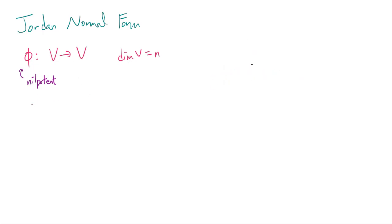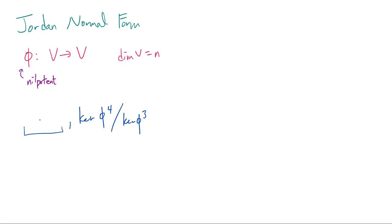Going back to phi, what we are going to consider is a chain, which is going to consist of kernel of phi to the 4th quotiented out by kernel of phi cubed. Remember that we talked about quotient space in episode 6. And to the left, we are going to have kernel of phi to the 5th modded out by kernel of phi to the 4th, then kernel of phi to the 6th modded out by kernel of phi to the 5th, and so on.